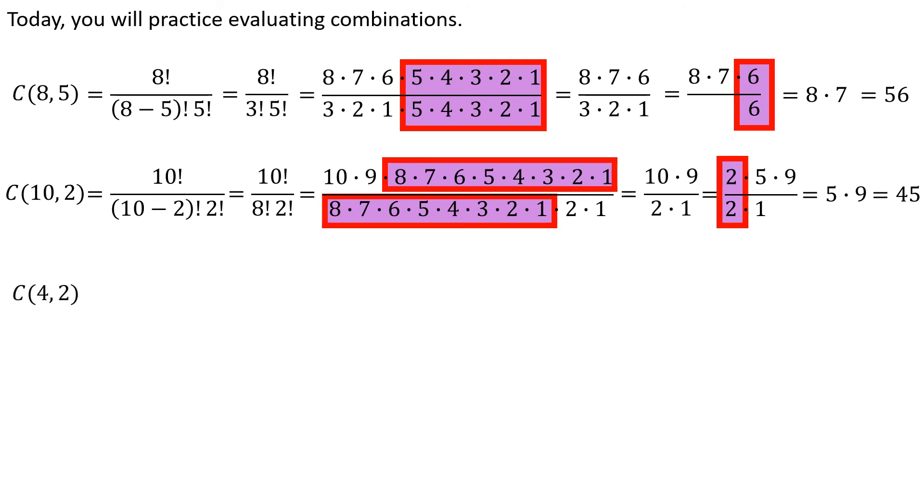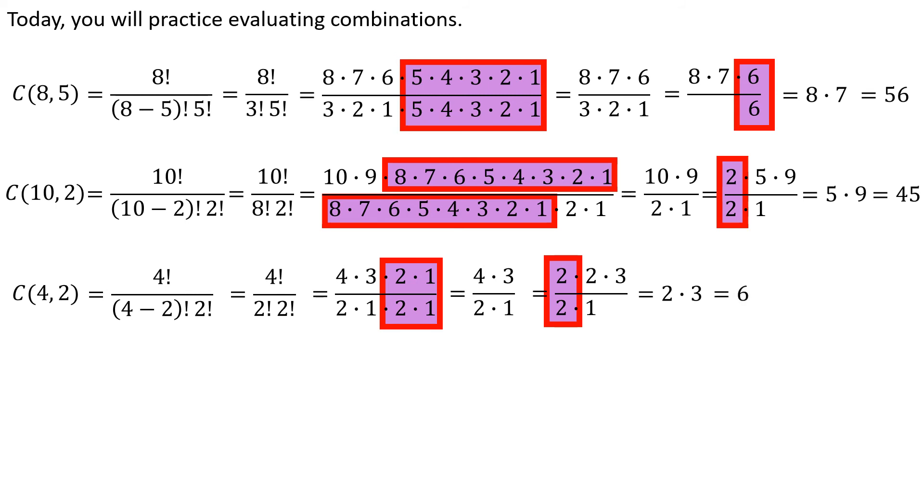Let's do one more real quick here. Combination 4 items taking 2 at a time. And so this is one of the examples where sometimes we get the exact same factorial repeated on the denominator. Piece of cake, let's cancel some things out. Of course, 4 divided by 2 is just going to leave me with a 2. So I really just have 2 times 3 on top. Dividing by 1 won't change anything. So 2 times 3 is 6.